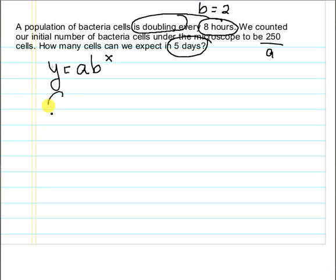So if we use C for our number of cells, we started with 250. We're doubling. Now we have to calculate the number of times we've doubled. So we need to figure out our total number of hours, which is five days times 24 hours per day. That will be our number of hours, and we have to divide that by eight to figure out how many times we've doubled. So that calculation will be our model for this particular problem.